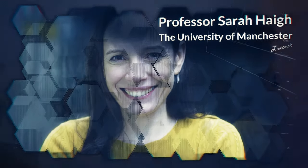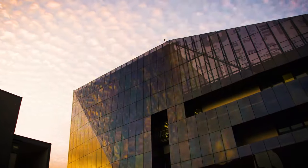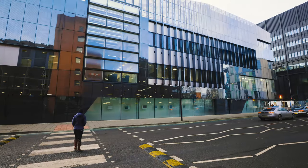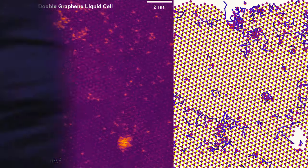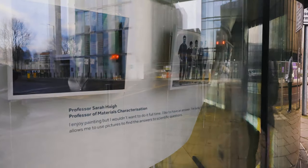My name is Sarah Haig and I'm a professor at the University of Manchester. My research involves transmission electron microscopy, which is a really powerful tool for being able to see atomic structure in a huge range of different materials.